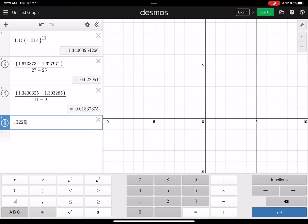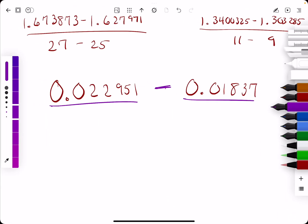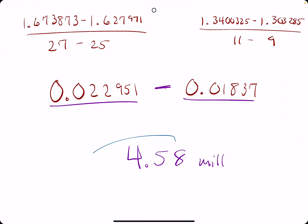0.02295 minus 0.01837, and 0.00458 should be the answer in billions of people per year. But we want to multiply this by a thousand to get 4.58 millions of people per year.